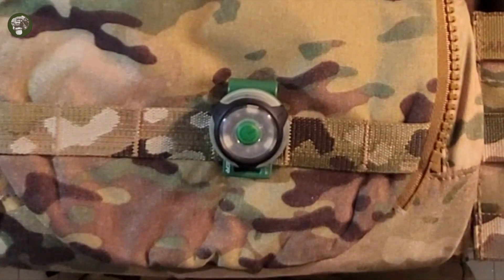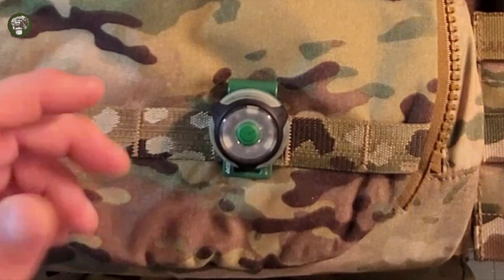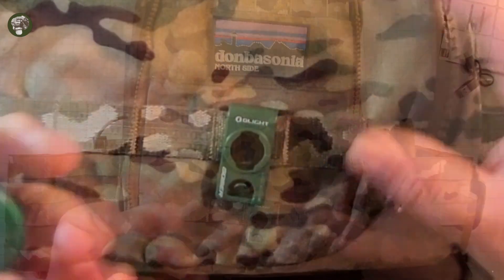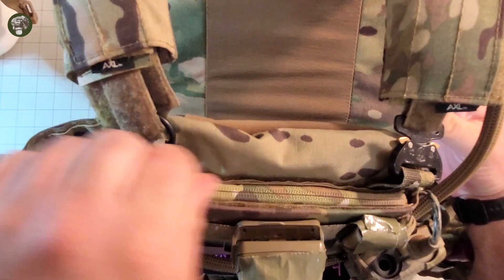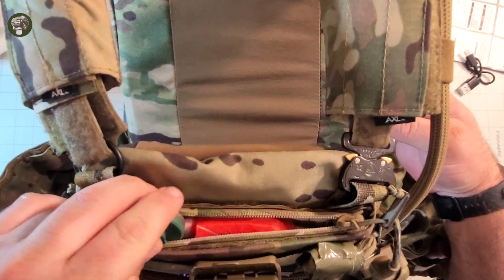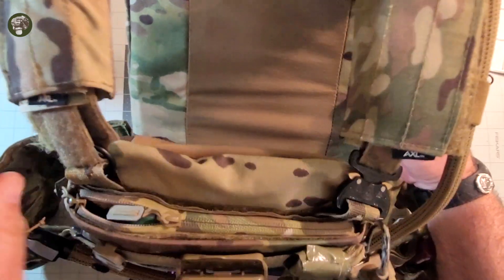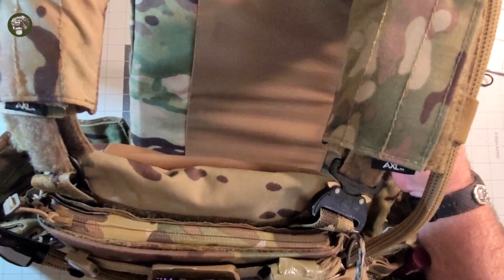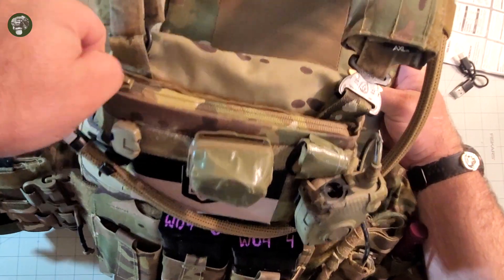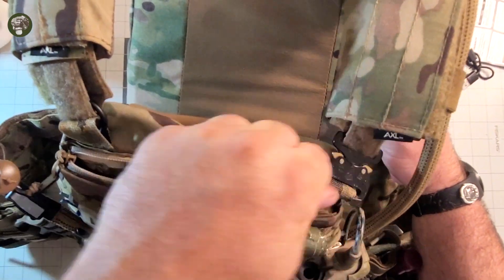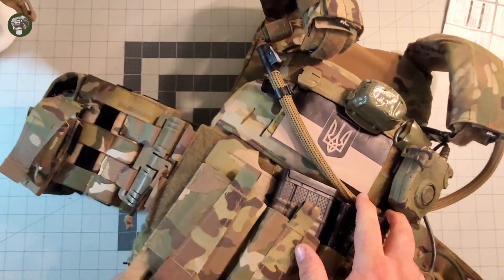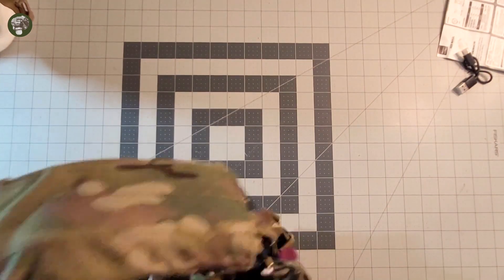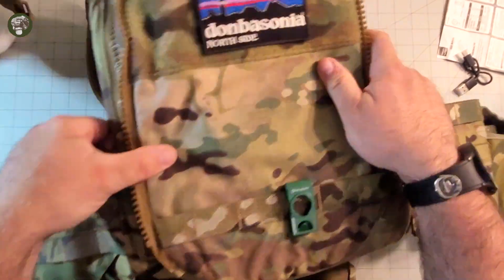Get the light in, boom, you're set. You can leave it on your kit, take it off, throw it in an admin pouch. Let's just show you, it's small, it's unobtrusive. I can put it in the admin up here. It takes up no space at all in my admin pouch.